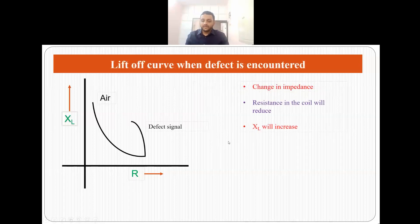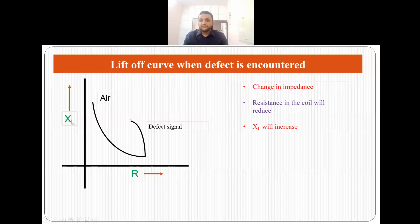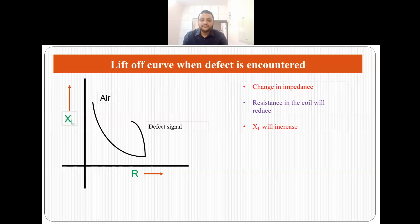But if the non-destructive testing engineers encounter a defect, then there will be a defect signal. There will be a change in impedance which will lead to a change in resistance, and X_L will also increase. So resistance will decrease and X_L will increase, and that is why we will get a spike when a defect is present, allowing us to figure out where exactly the defects are.